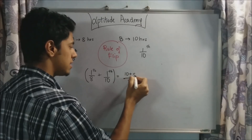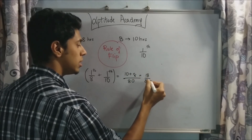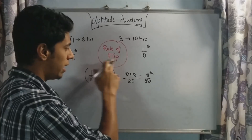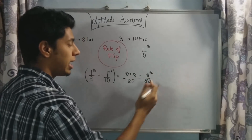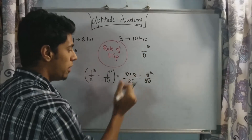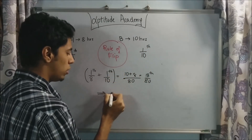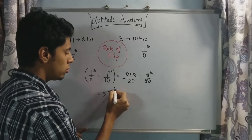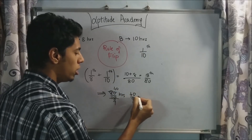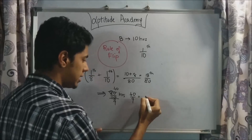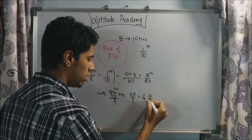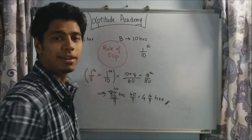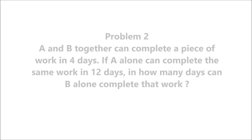Together, taking the LCM of eight and ten — eight tens are eighty and ten eights are eighty — this becomes eighteen by eighty. This much of the work is done every hour. Now to find how much time it takes, apply the rule of flip again: flip eighteen over eighty to get eighty by eighteen hours. Simplifying: eighty by eighteen = forty by nine. So the work will be completed in forty by nine hours.